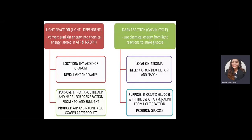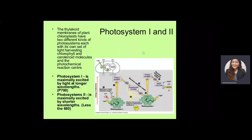Photosystem I captures wavelengths of P700, while photosystem II captures photons at wavelengths less than 680. Photosystem I and photosystem II energize electrons to recharge ATP and NADPH, and this happens in the membrane of the thylakoids.